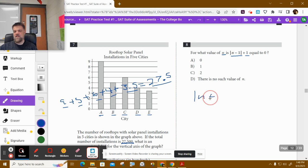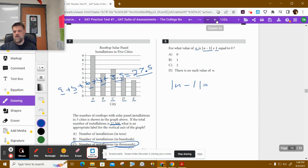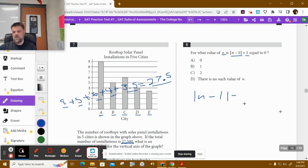The absolute value of n minus 1 is equal, or I'm sorry, plus 1 equals 0. So the first thing I'm going to do is I'm going to subtract 1 from both sides.